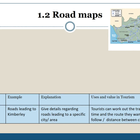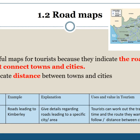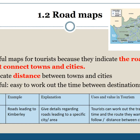If you travel a lot, you will definitely make use of a road map. These maps are useful for tourists because they indicate the roads that connect towns and cities, and also the distance between them, making it easier to work out the travel time between destinations — when you leave and your time of arrival. In the table, the type of map is the road map, for example roads leading to Kimberley, with the explanation being to give details regarding the road leading to a specific area or city. Tourists can work out the traveling time, the route they want to follow, or the distance between cities.